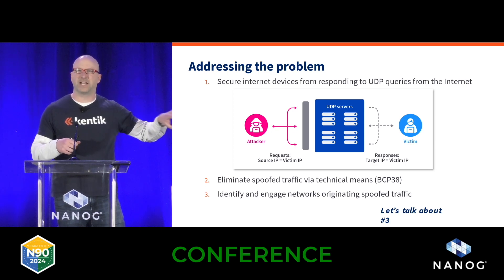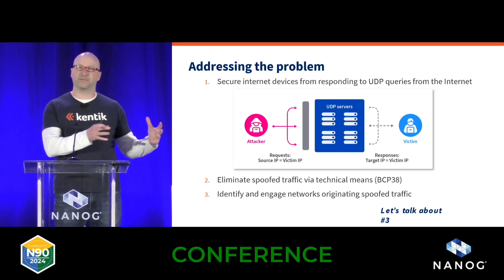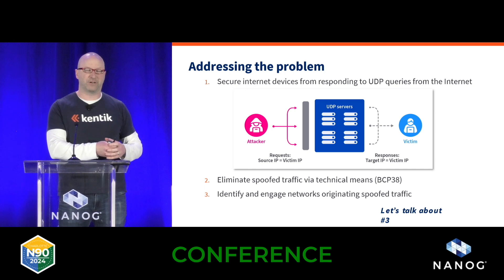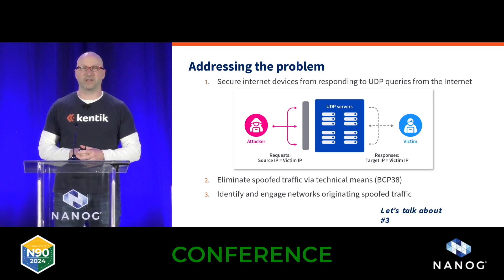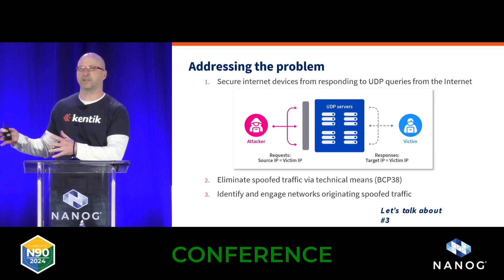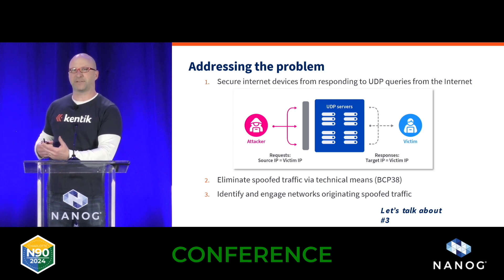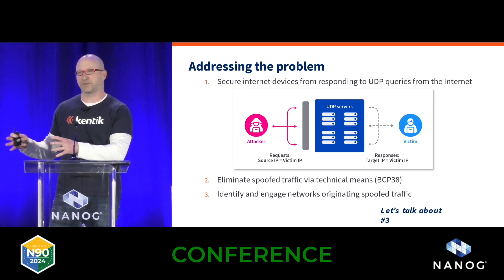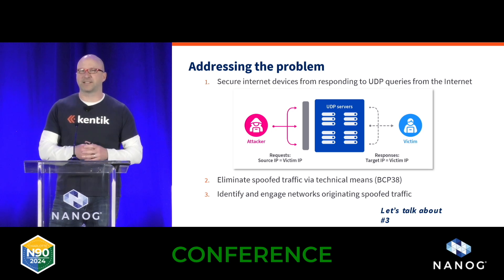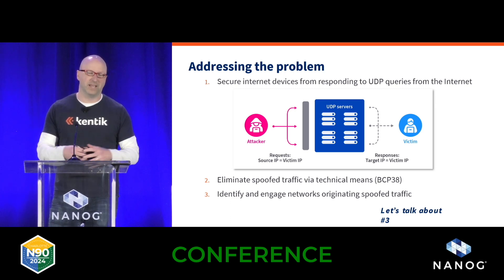We can try to address spoof traffic through technical means. People are familiar with BCP 38, and also probably familiar with the fact that it's not deployed everywhere. There are a few categories of non-deployment. Lack of awareness and education is probably the biggest category. Some people just don't care. There's also a category of transit providers who may not feel they can deploy BCP 38 because it may put legitimate customer traffic at risk due to asymmetric routing. And then there's this last category — figuring out who these networks are that are announcing the spoof traffic and trying to get them to stop.